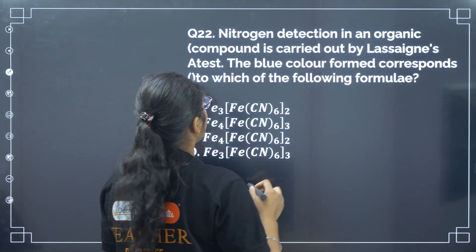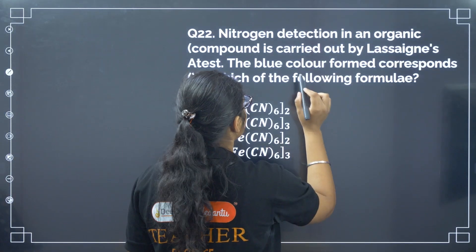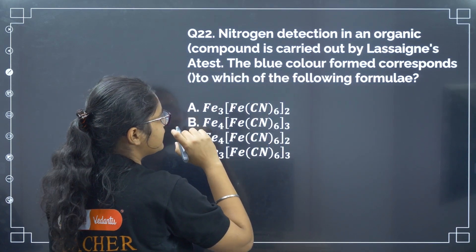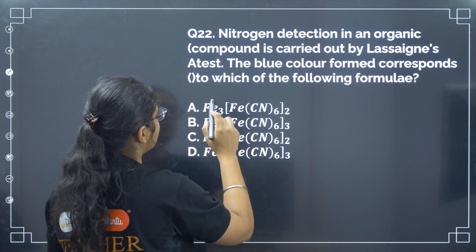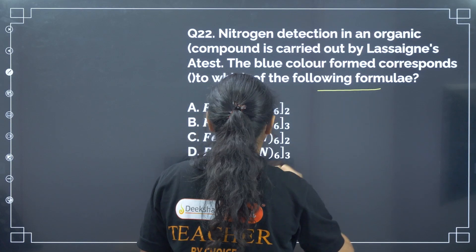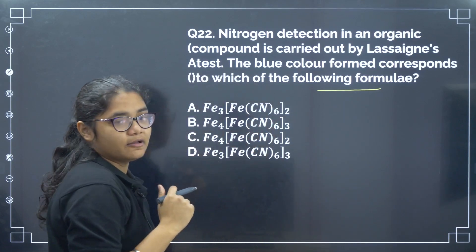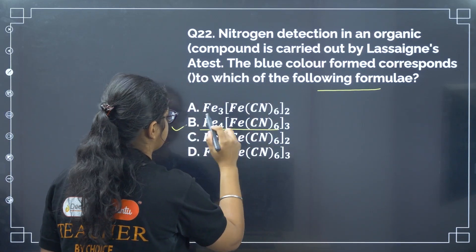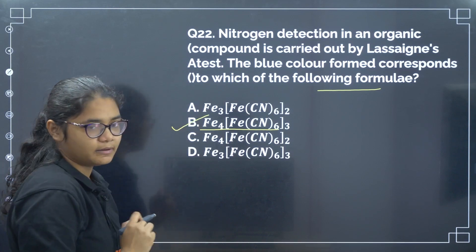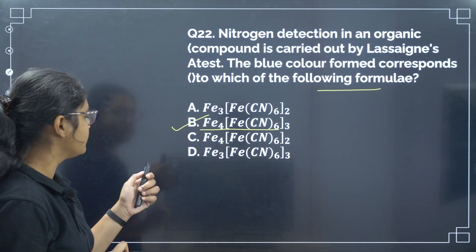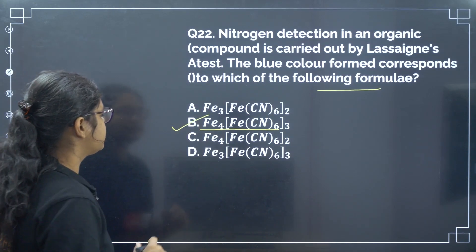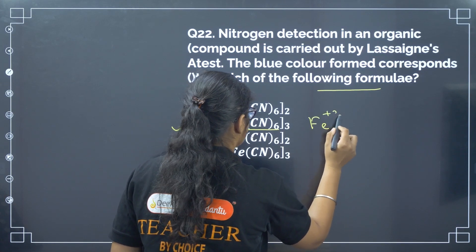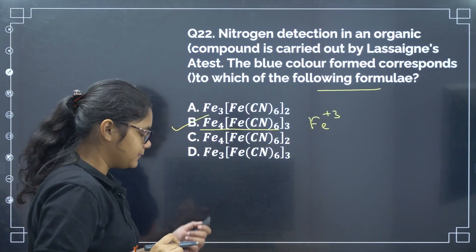Next: nitrogen detection in an organic compound is carried out by Lassaigne test. The blue color formation is due to Prussian blue, which is ferric ferrocyanide. Remember: the blue color is due to ferric ferrocyanide — Fe is in the +3 state. Correct answer is option number B.